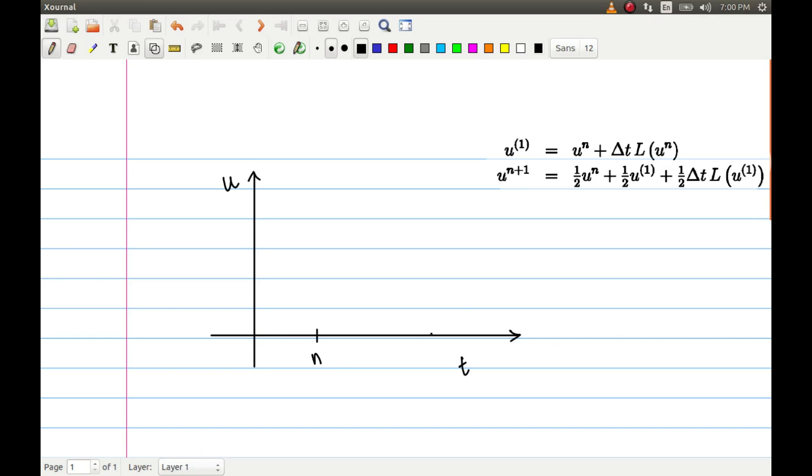Let's say this is axis t and this is axis u. We are at time level n and we want to go to time level n+1. At time level n we have a solution u^n, and we are interested in getting a solution at a later time step.